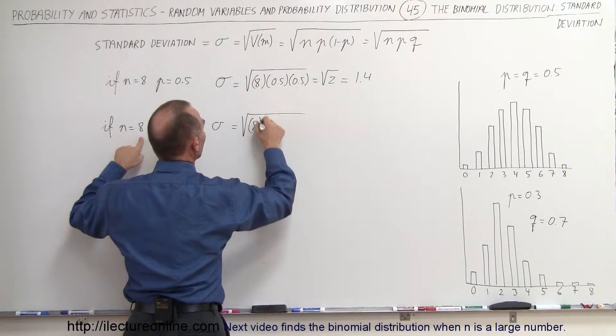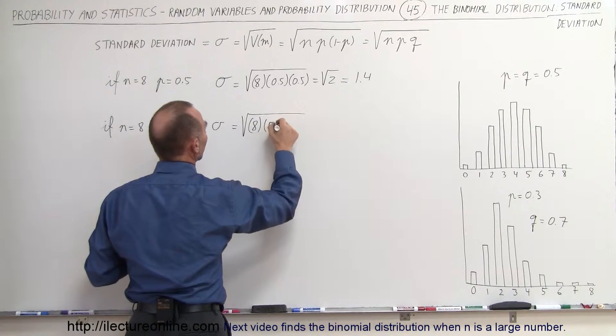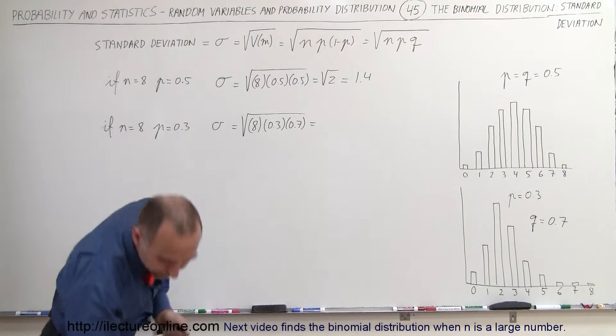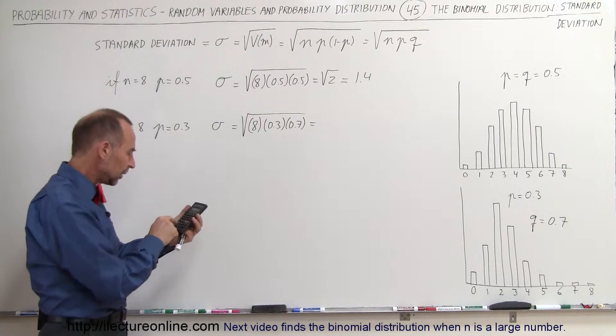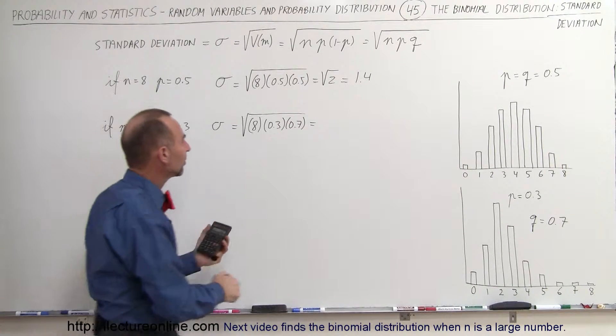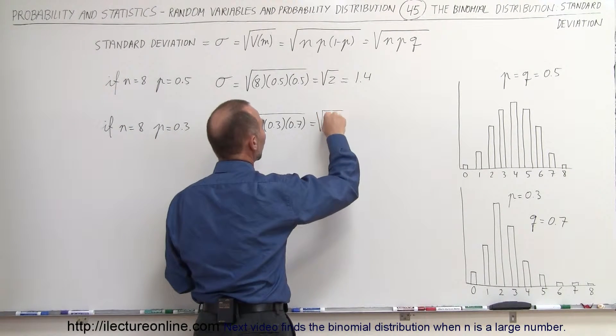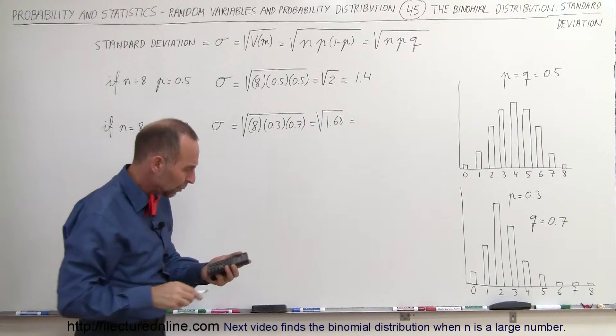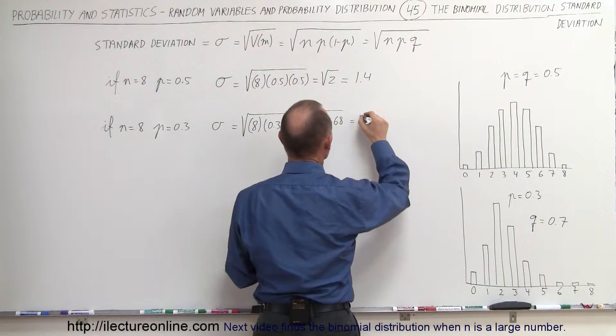And the second one, sigma is equal to the square root of n would be 8, the probability of success would be 0.3, and the probability of failure would be 0.7. So 8 times 0.3 times 0.7, that's 1.68, so the square root of 1.68. If we take the square root of that we get 1.3.